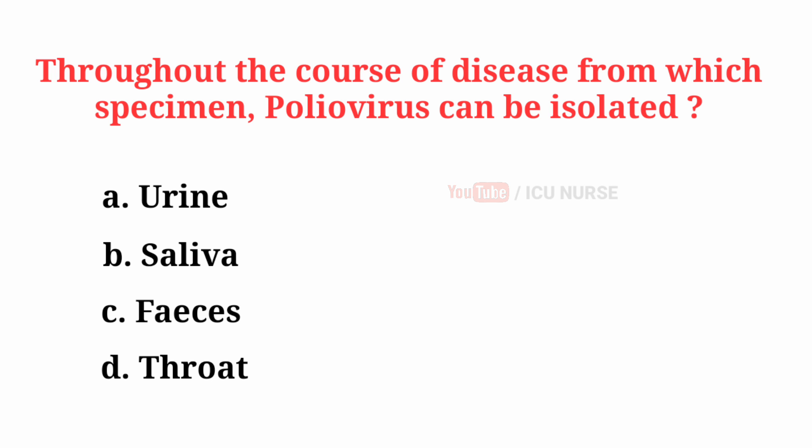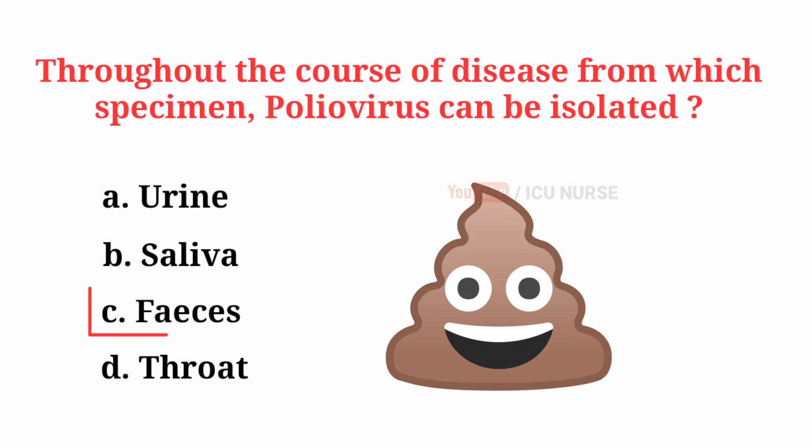Throughout the course of disease, from which specimen can poliovirus be isolated? The correct answer is C, Feces.